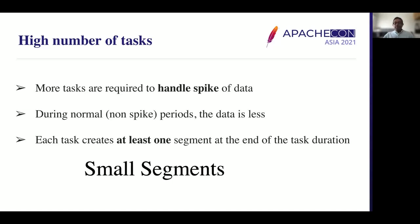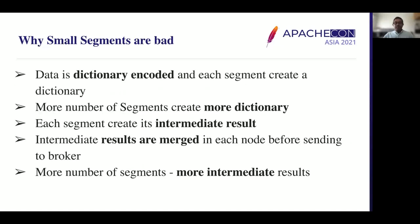How do we get out of this? Why are small segments bad? In Druid, data is dictionary-encoded, meaning each segment creates a dictionary. The size of the dictionary depends on the cardinality of the columns — higher cardinality means a larger dictionary. When Druid processes queries, data from each segment is retrieved, and each thread reads one segment and creates an intermediate result.